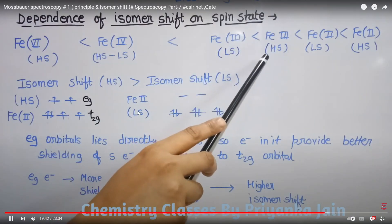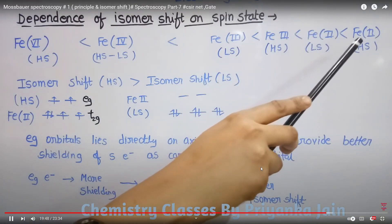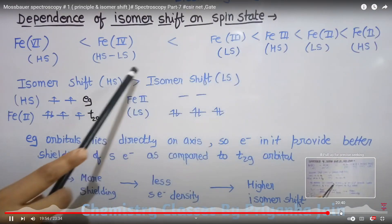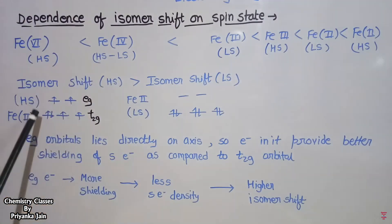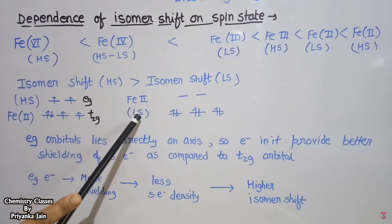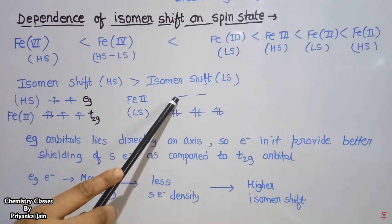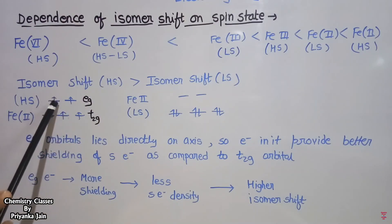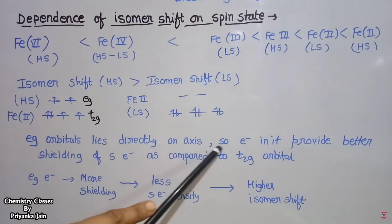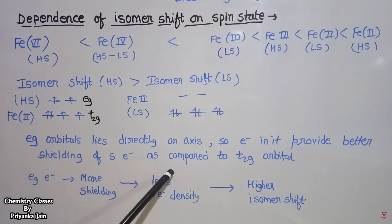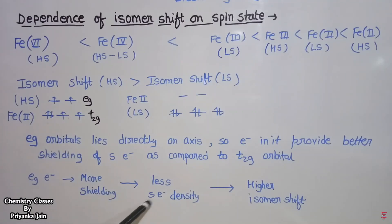For iron speciation: Fe³⁺ in high-spin state has higher isomer shift; Fe²⁺ in low-spin complex has intermediate isomer shift; and Fe²⁺ in high-spin state has the highest isomer shift. High-spin complexes have higher isomer shift than low-spin complexes because in high-spin state, electrons occupy eg orbitals which lie directly on the axis, providing better shielding of s-electrons compared to t2g orbitals. This reduced s-electron density at the nucleus results in a higher isomer shift.